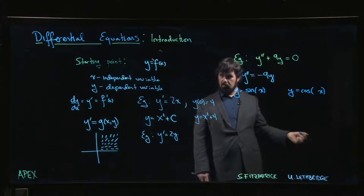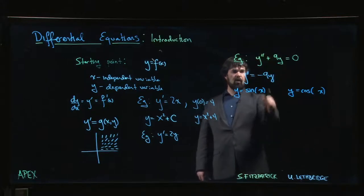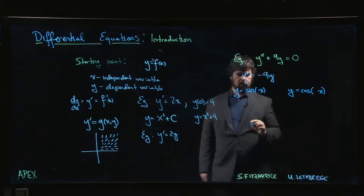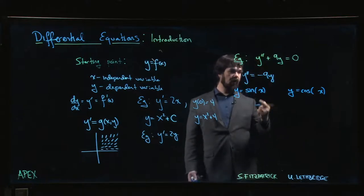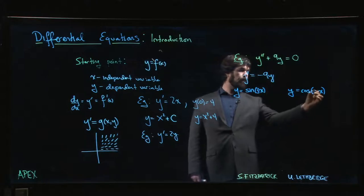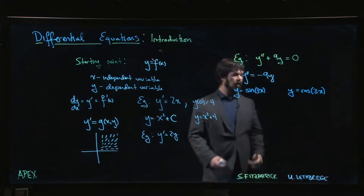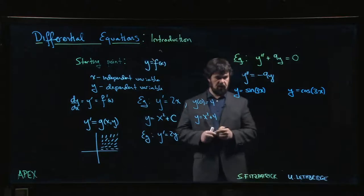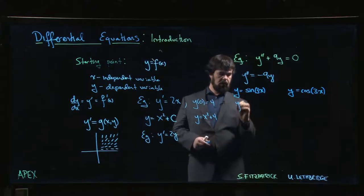Okay, so cos x works. Derivative of cos gives you negative sine, derivative of negative sine gives you negative cos. But of course you still have to get that nine. Well, again, chain rule comes in. Nine is three times three, so if we put a three in there, that's going to give me the job.